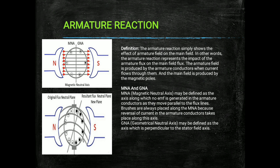The next part is MNA. MNA stands for Magnetic Neutral Axis. It may be defined as the axis along which no EMF is generated in the armature conductor, as they move parallel to the flux lines — that means in that axis no EMF is induced. GNA stands for Geometrical Neutral Axis, defined as the axis which is perpendicular to the stator field axis. In ideal conditions the GNA and MNA coincide with each other, but due to armature reaction the MNA shifts from the GNA by an angle theta.